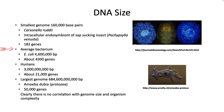The average bacterium, such as E. coli, has a genome of about 4 million base pairs and about 4,000 genes. Humans have about 3 billion base pairs and about 21,000 genes. The largest known genome belongs to Amoeba dubia, a protozoan, which is more than 684 billion base pairs. Clearly, there is no correlation between genome size and organism complexity.